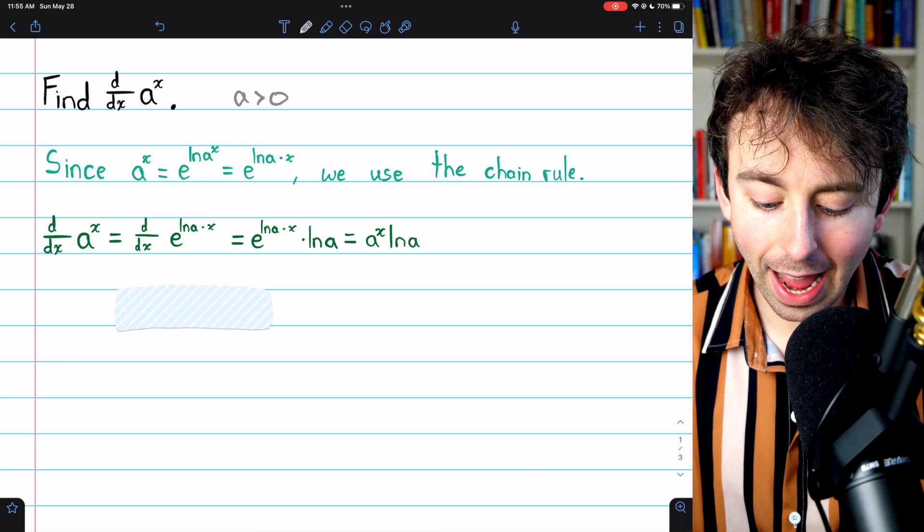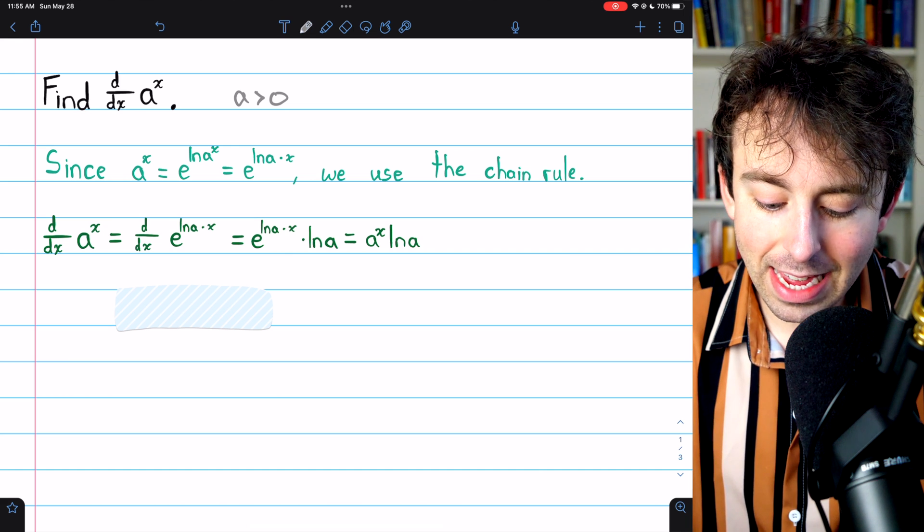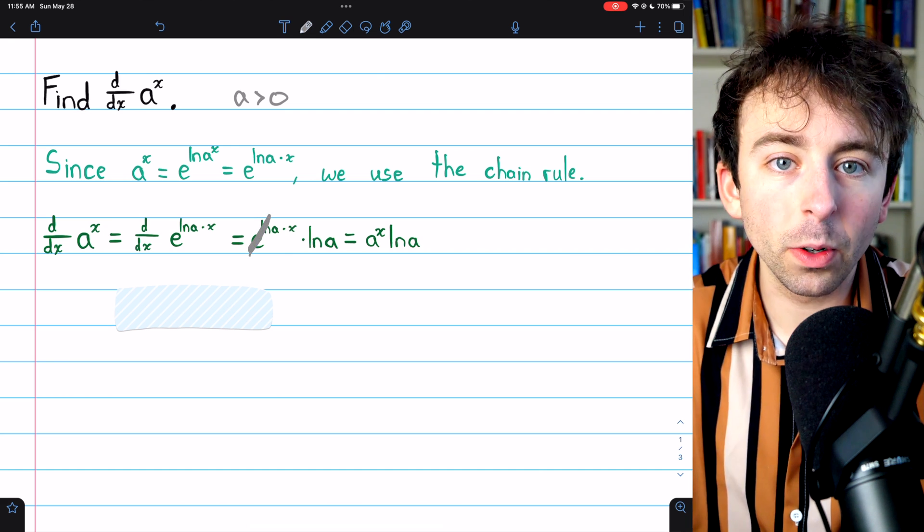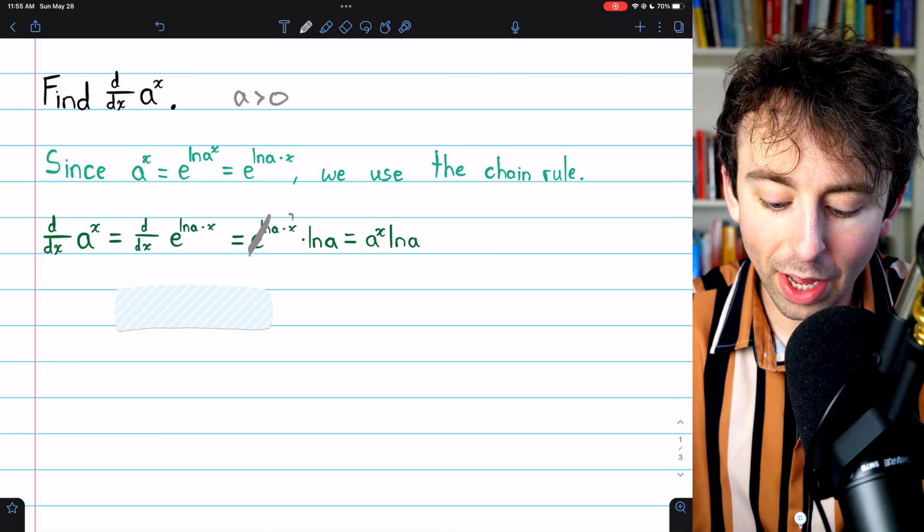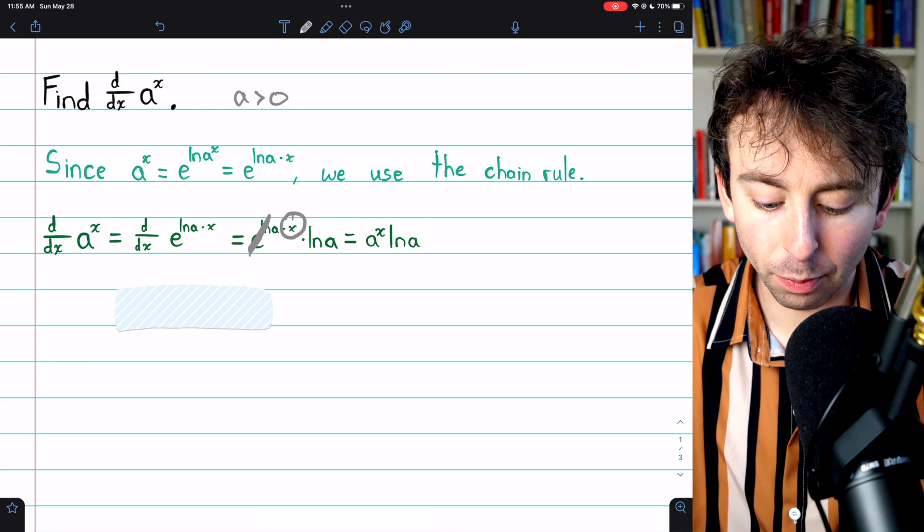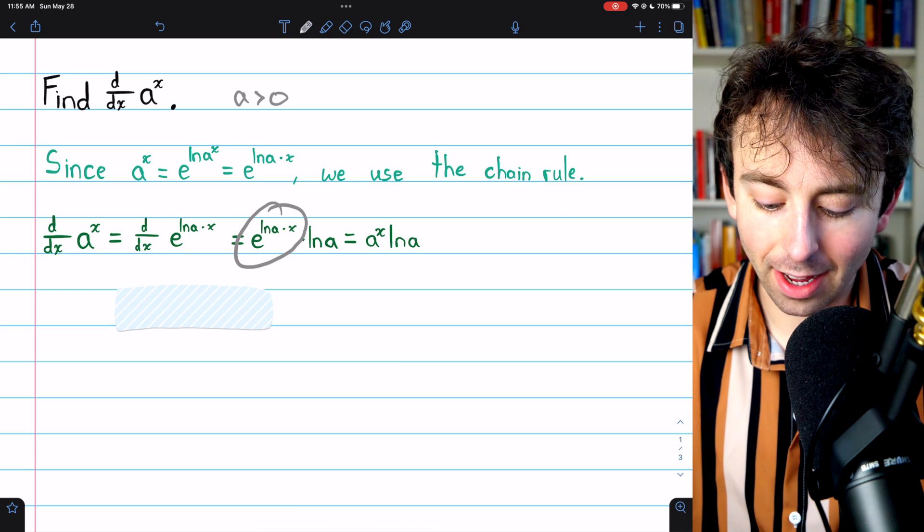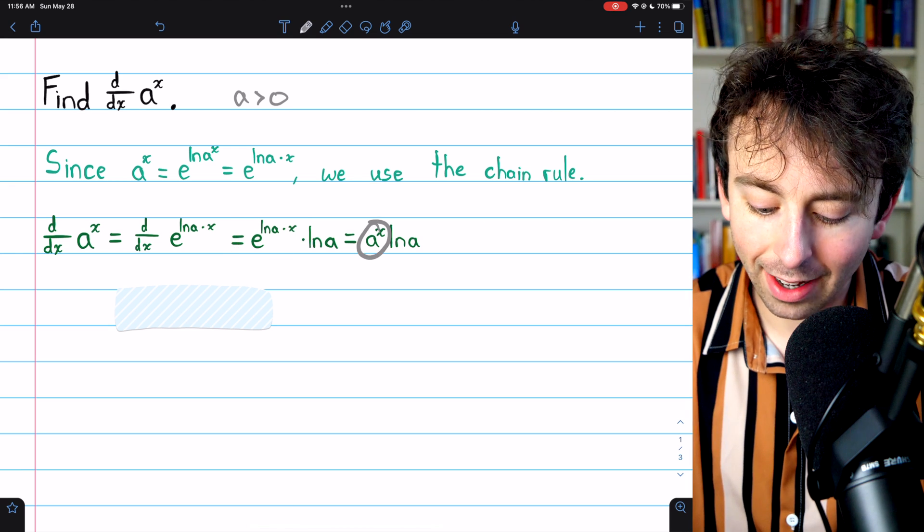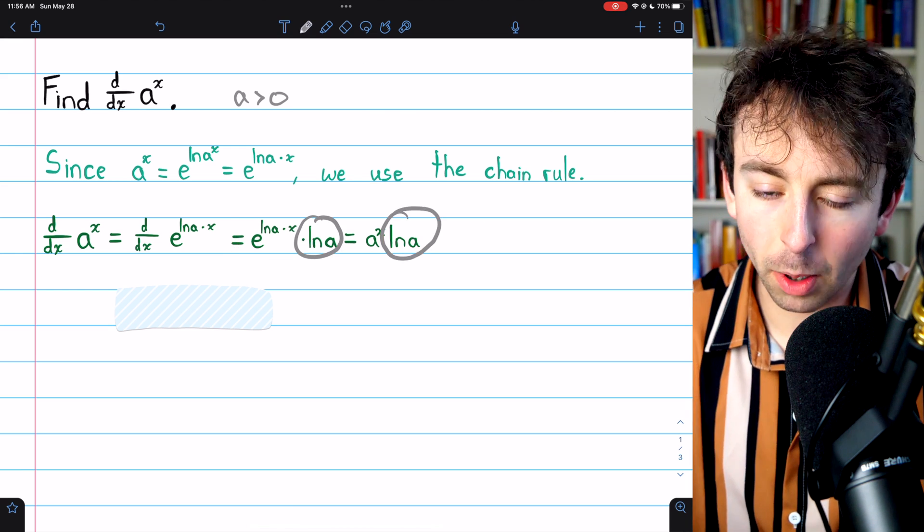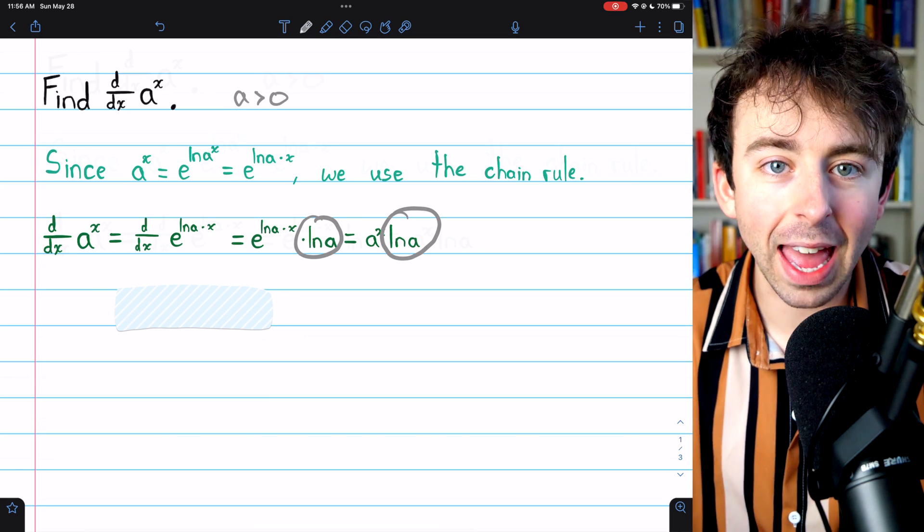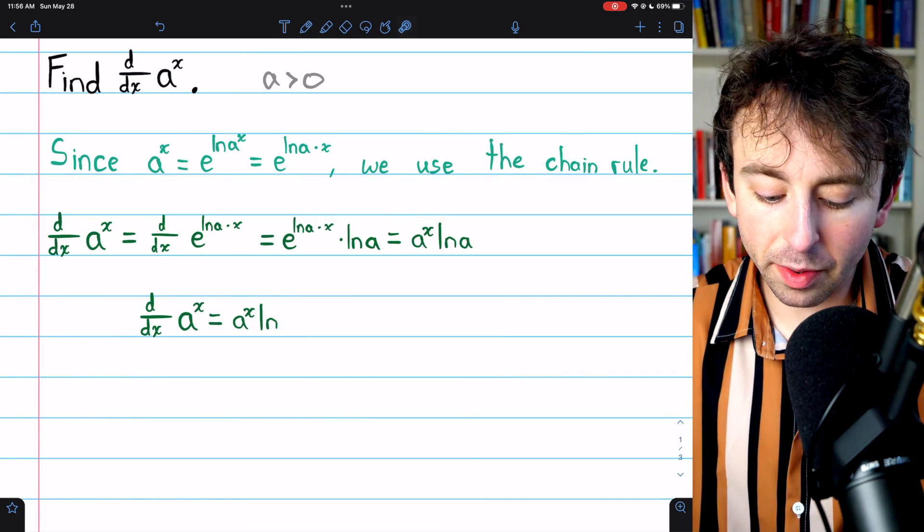Now e to the ln a times x, the e and the ln would cancel out, just leaving a with x still in the exponent. So e to the ln a times x is a to the x. And of course, that's still getting multiplied by the natural log of a. And that is our derivative formula.